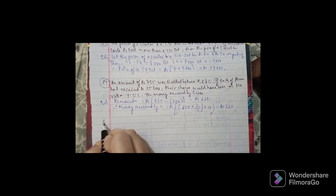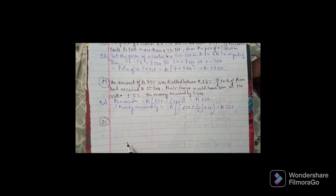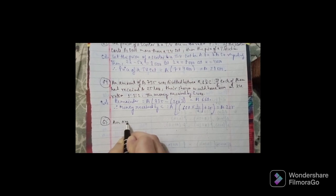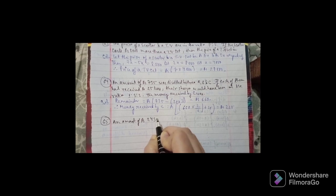The 65th question: An amount of rupees 2,430 is divided among A, B, and C such that if their shares be reduced by rupees 5, rupees 10, and rupees 15 respectively, the remainder shall be in the ratio 3:4:5. Then B's share was — options: 605, 790, 800, and 810.